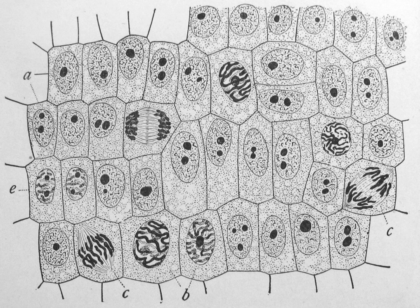A prokaryotic cell has three architectural regions. Enclosing the cell is the cell envelope, generally consisting of a plasma membrane covered by a cell wall which, for some bacteria, may be further covered by a third layer called a capsule. Though most prokaryotes have both a cell membrane and a cell wall, there are exceptions such as mycoplasma and thermoplasma which only possess the cell membrane layer. The envelope gives rigidity to the cell and separates the interior of the cell from its environment, serving as a protective filter.